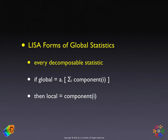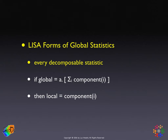In general, before getting to specific statistics, a LISA form of a global statistic is any global statistic that is decomposable in the following sense: if the global statistic equals some scaling factor A times the sum over all observations i of a measure computed for location i, then the local statistic is that component at location i. Next, we move into the local Moran, which is a specific application of this principle.